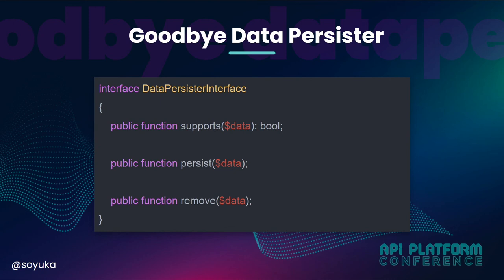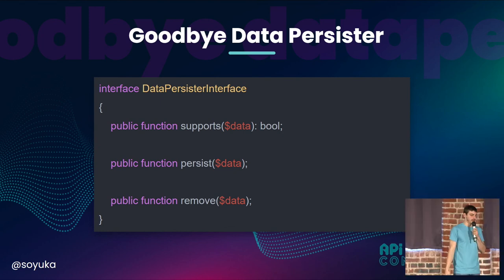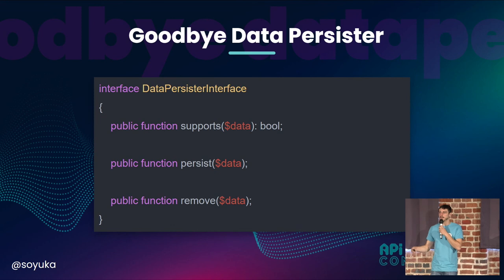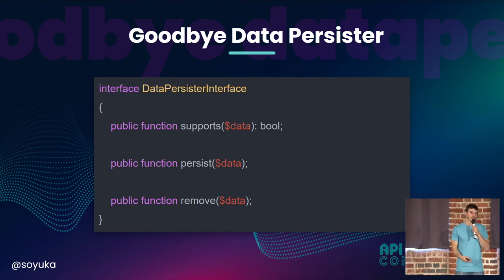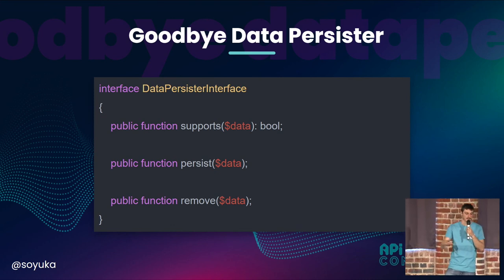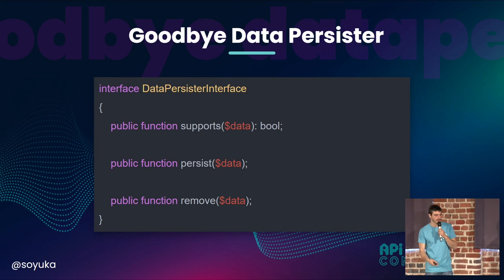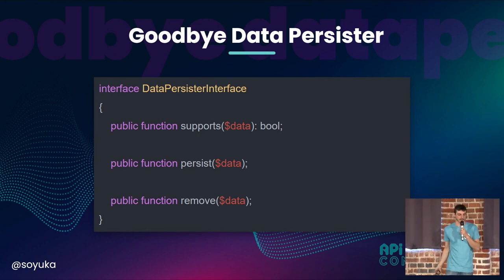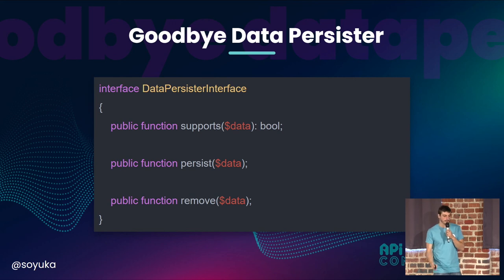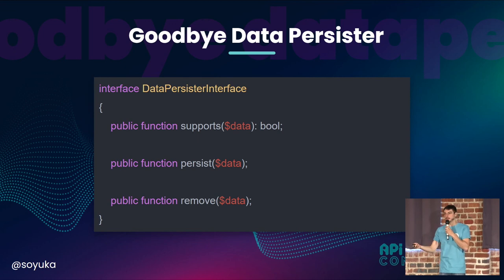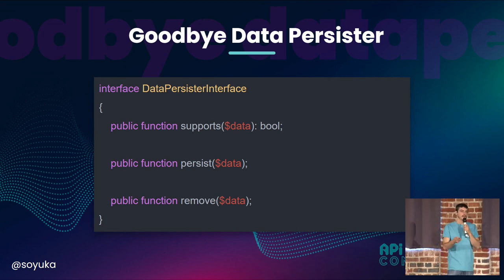The interface today looks like this. There are three methods, but in the end we added a bunch of interfaces like the context-aware data persister interface and the resumable data persister interface. We wanted things to be a bit more simple. Also, we often say that inside these persisters you can do way more than just adding data to the database.